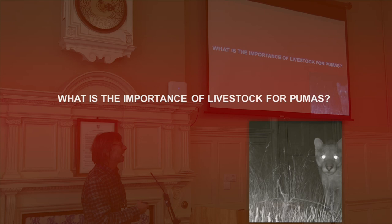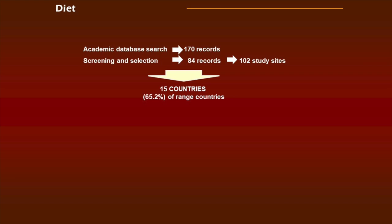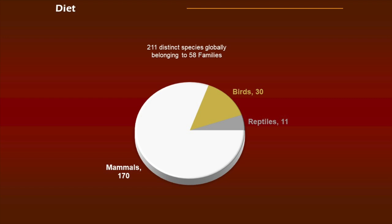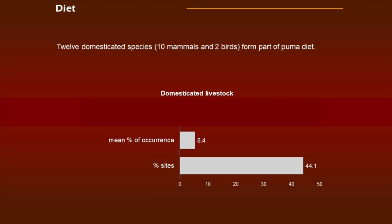What is the importance of livestock for pumas? We studied the diet of pumas using a large database from 15 countries — a great proportion of the countries where pumas are found — with large variation in context and habitats. We found that pumas can feed on 211 different species, mostly mammals (80%). They can also feed on 12 domesticated species. Domesticated livestock appears in 44% of study sites, but the mean percentage of occurrence is only 5.4%.